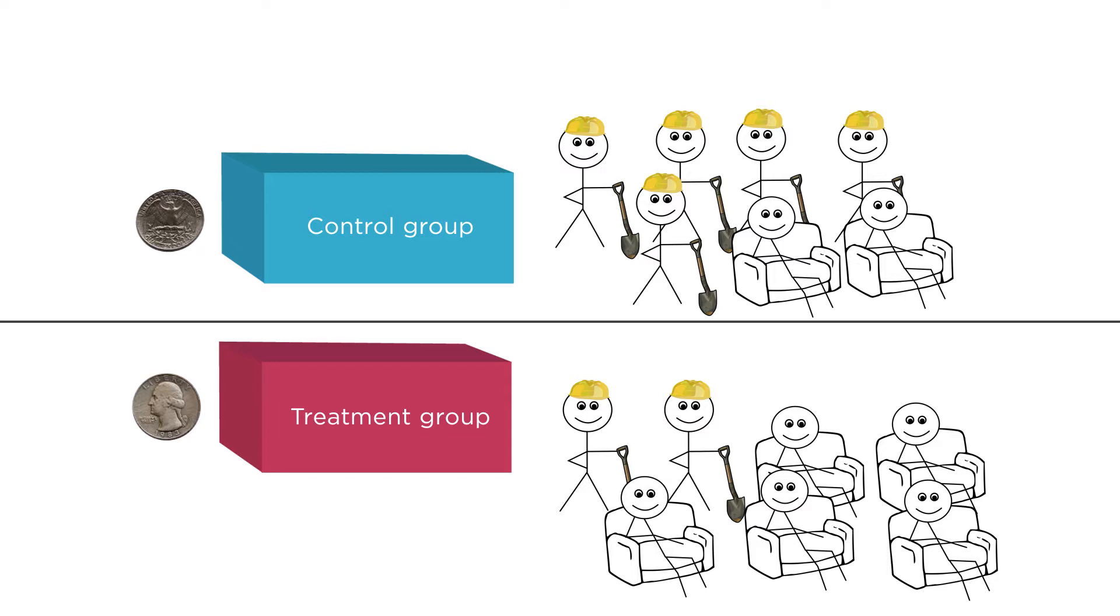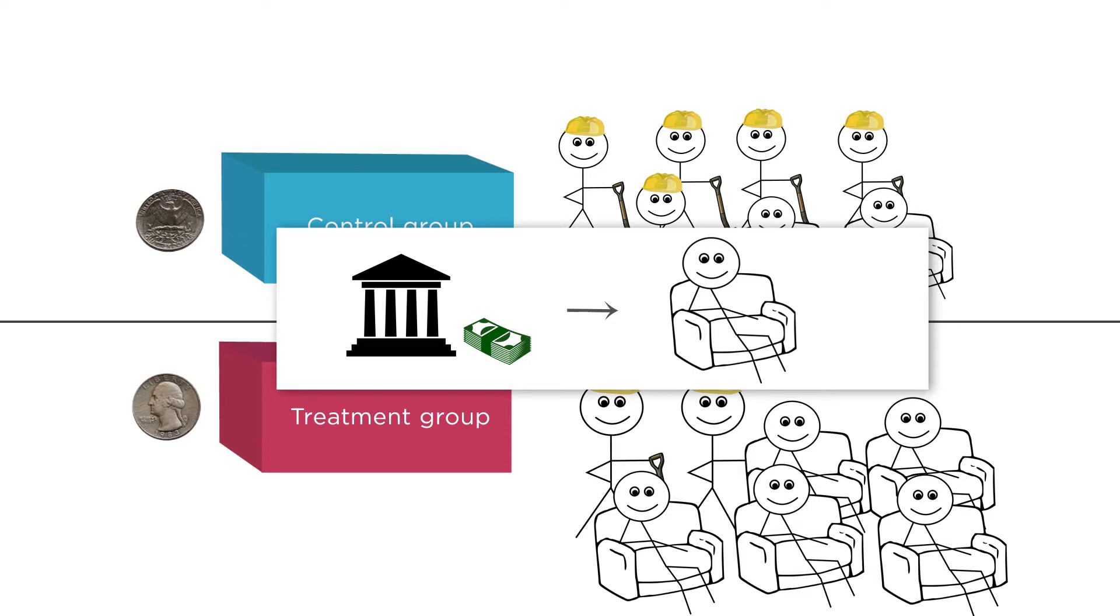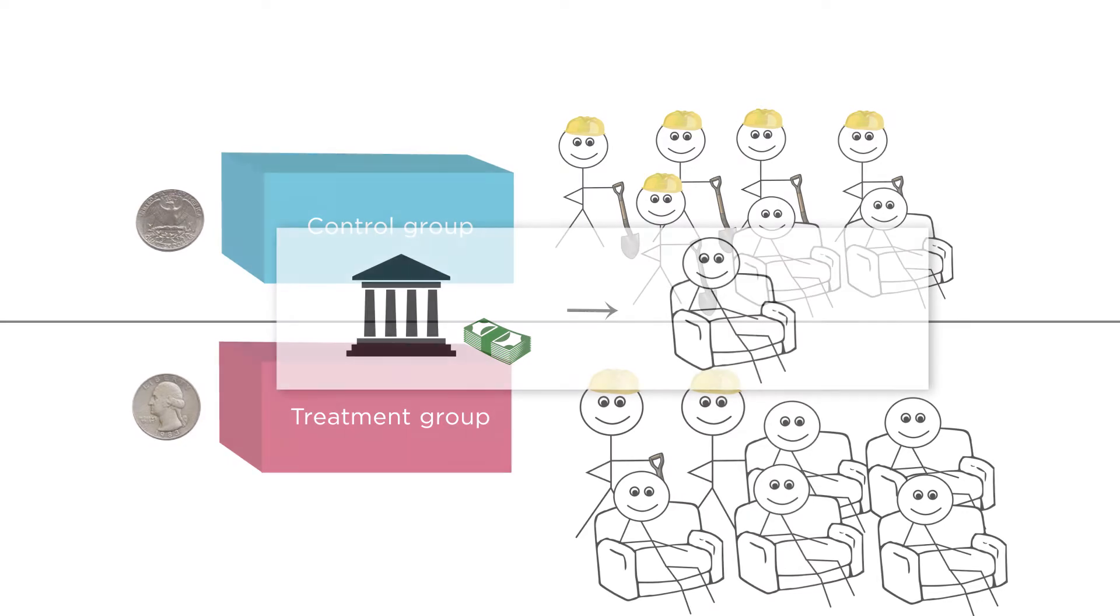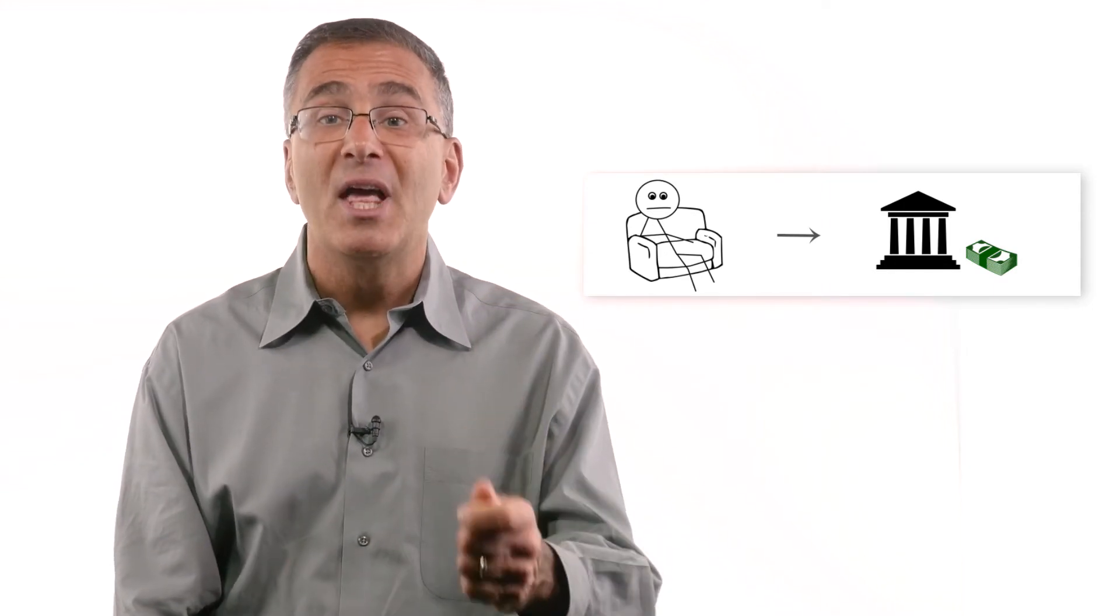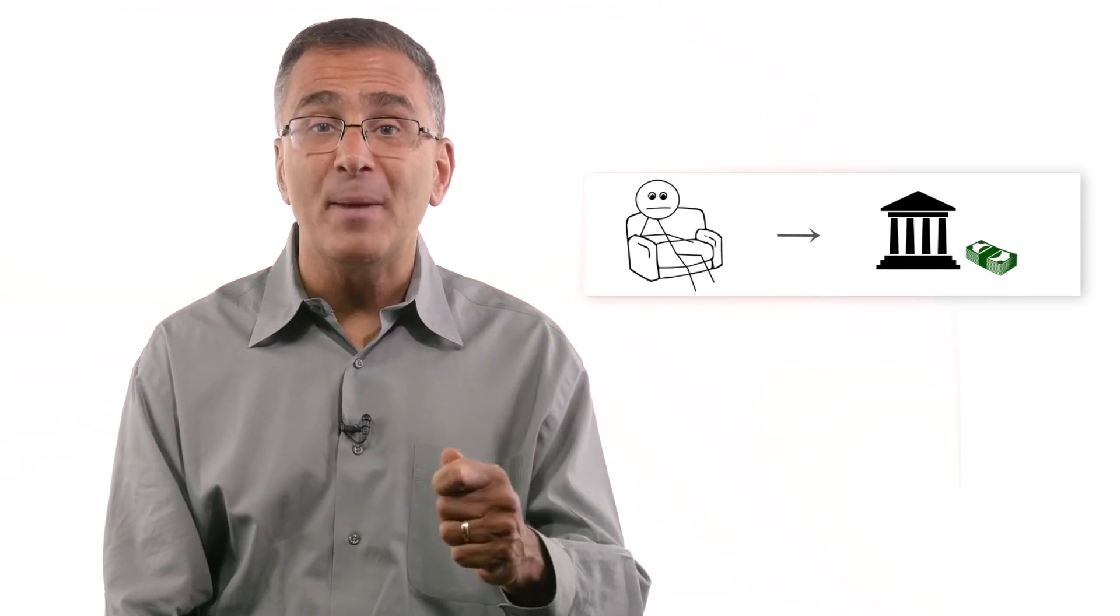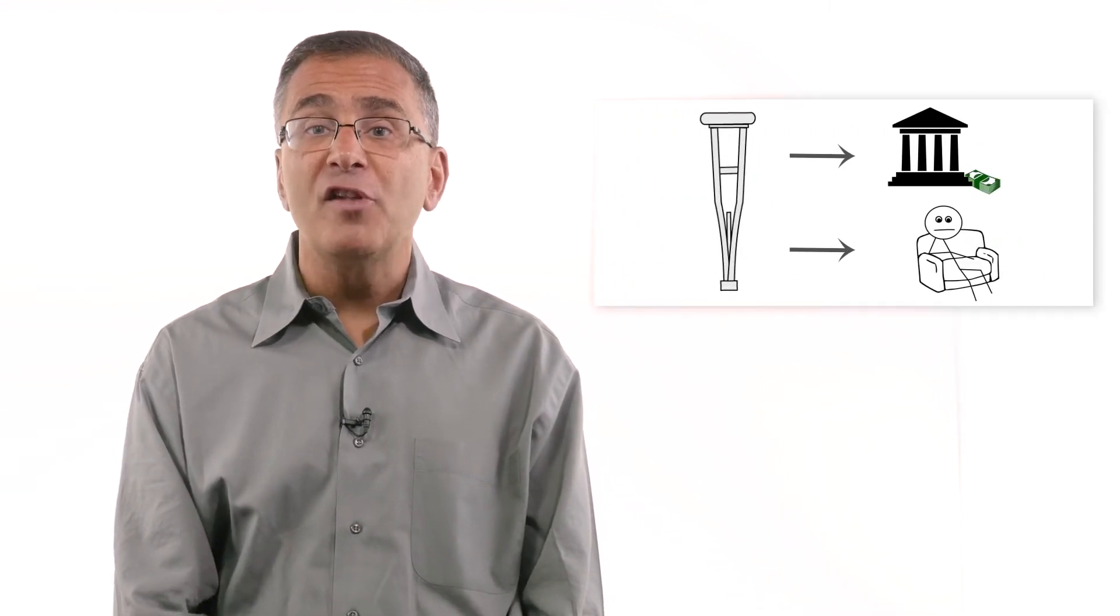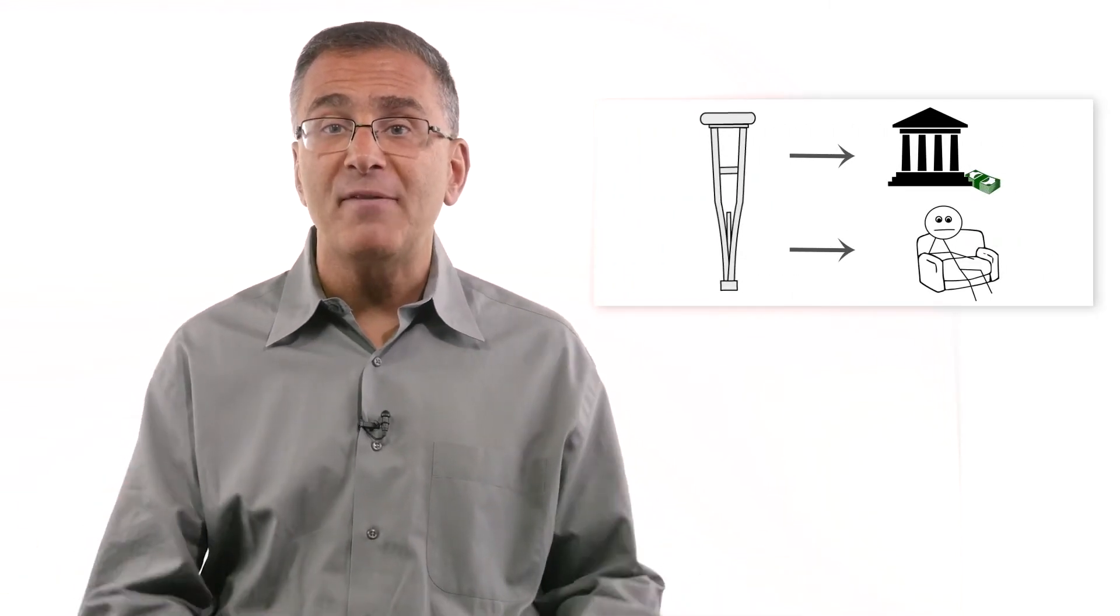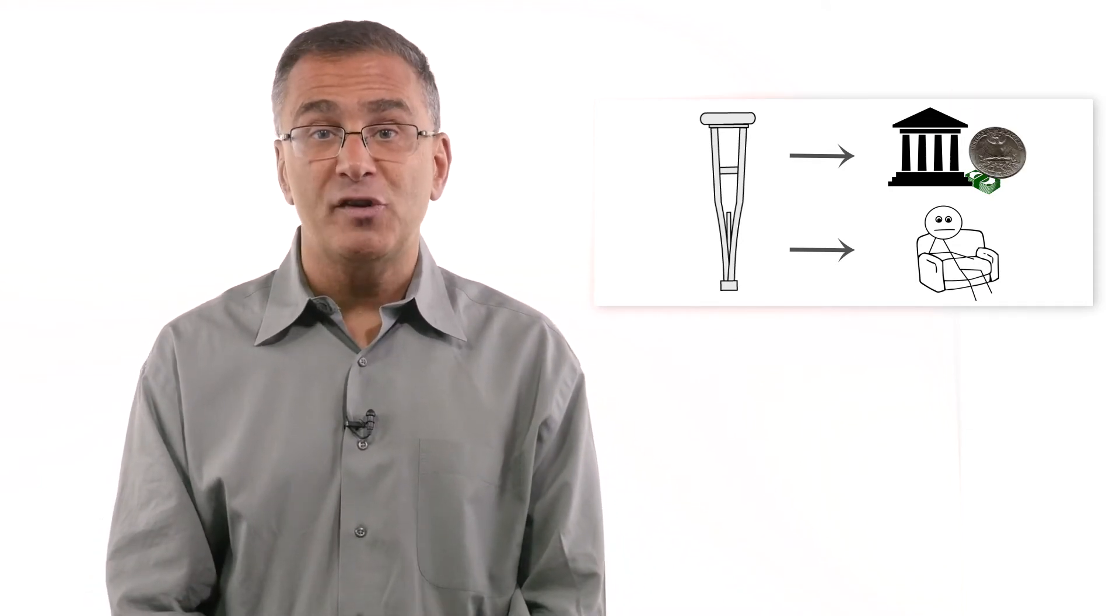For example, suppose we carried out this experiment and found that the treatment group that got higher benefits through a coin flip ended up working less. This shows that the higher benefits caused folks to work less. How do we know that it wasn't that people worked less for other reasons and would thus get more government benefits? Because the benefits were decided by a coin flip that had nothing to do with how much the person was working. And how do we know that it wasn't some third factor such as disability that caused both the lower work hours and the government benefits? Because the benefits were decided by a coin flip that had nothing to do with the disability status of the individual.